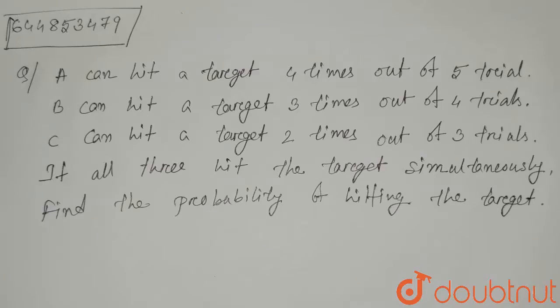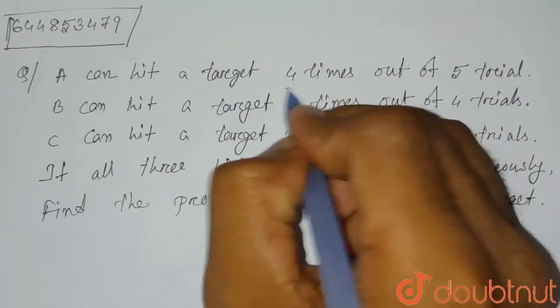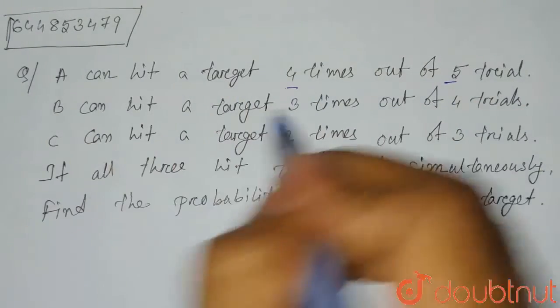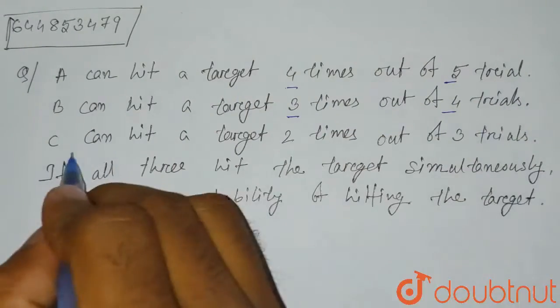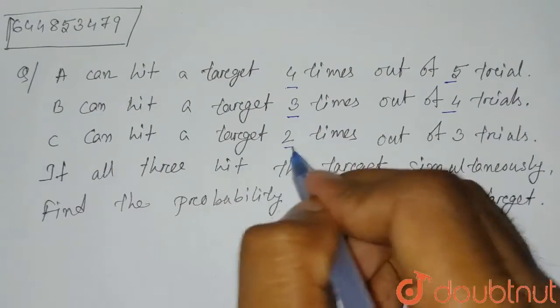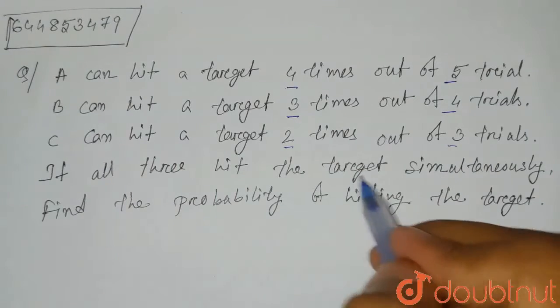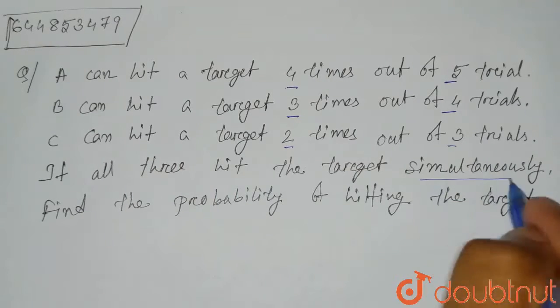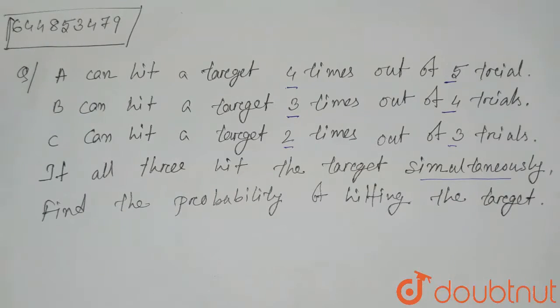Hello everyone. The question is: A can hit a target 4 times out of 5 trials, B can hit a target 3 times out of 4 trials, C can hit a target 2 times out of 3 trials. If all 3 hit the target simultaneously, find the probability of hitting the target.